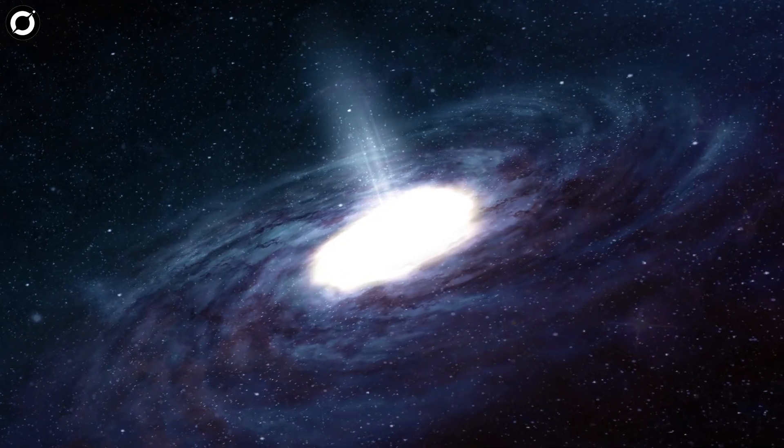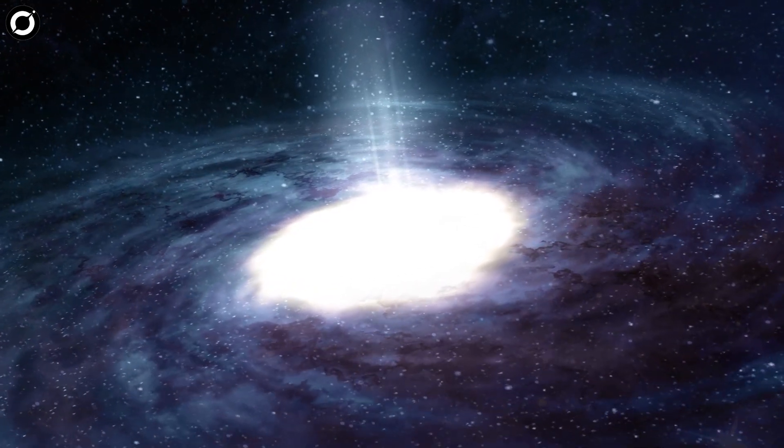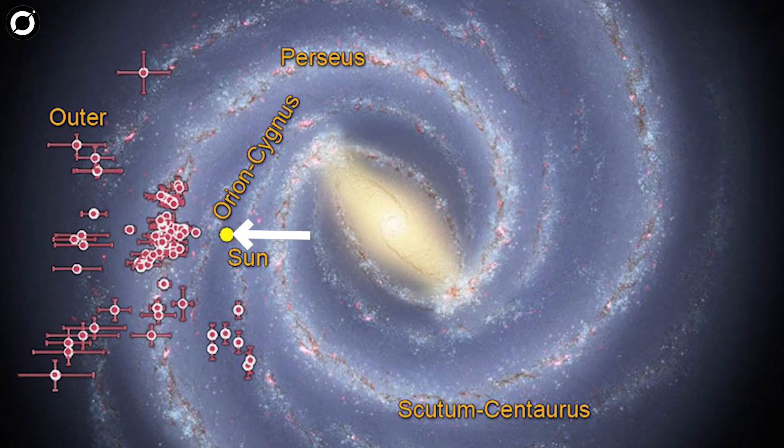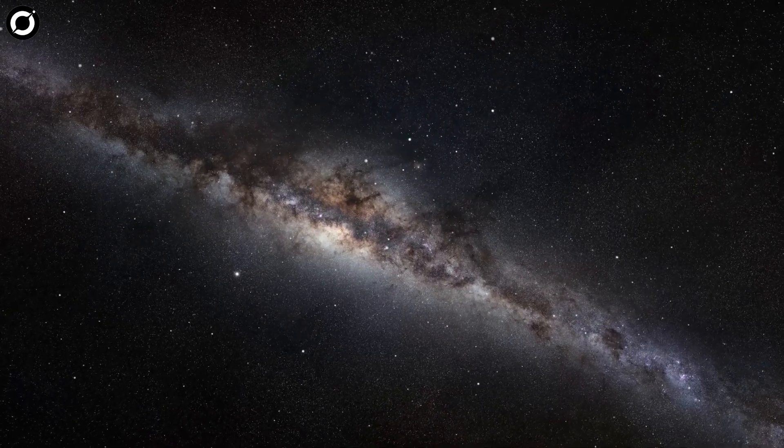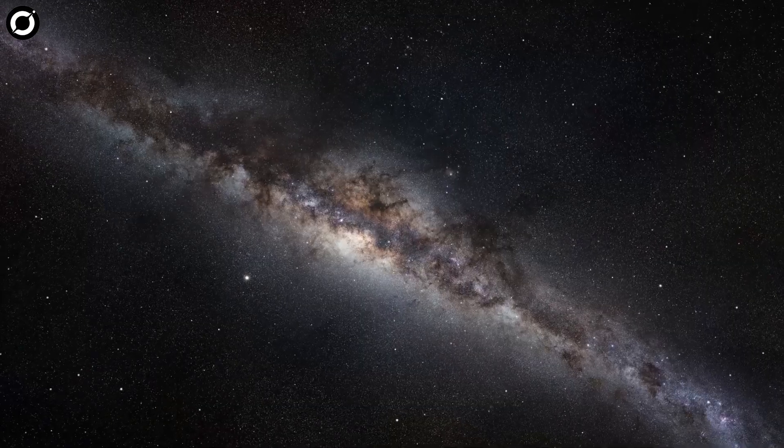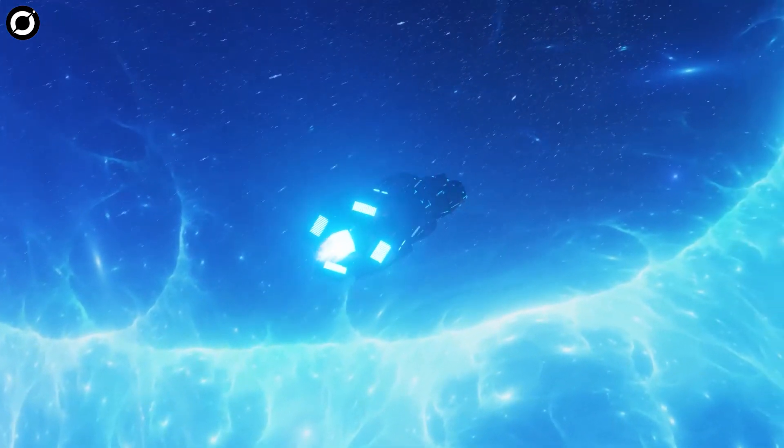Our own galaxy, the Milky Way, is just one of these trillions of galaxies, and it's shaped like a spiral, with the Sun located in one of its outer arms. In fact, the Milky Way itself is about 100,000 light-years across, so it would take light 100,000 years to travel from one side to the other.